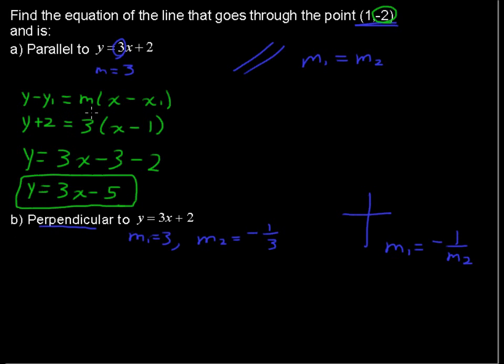All right, throwing that into point-slope form, we would get y plus 2, that's again y minus the negative 2, equals negative 1 third times x minus 1.